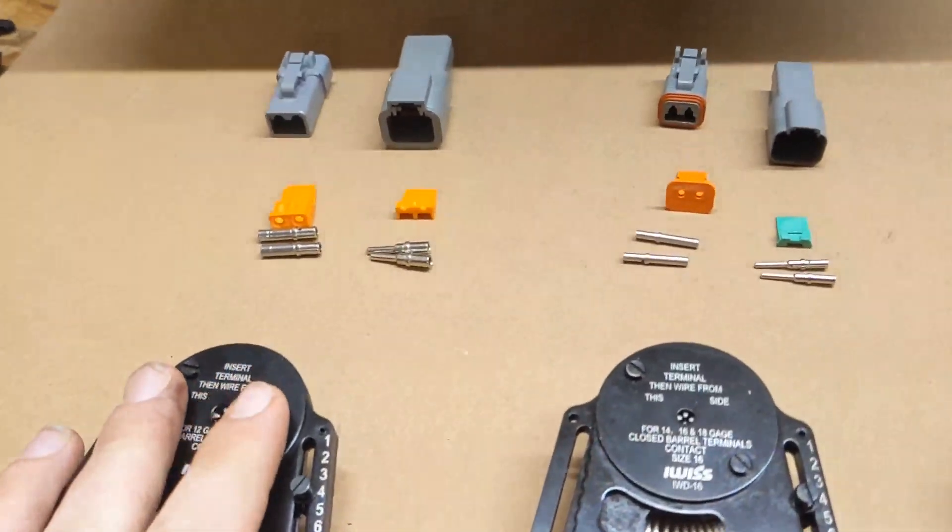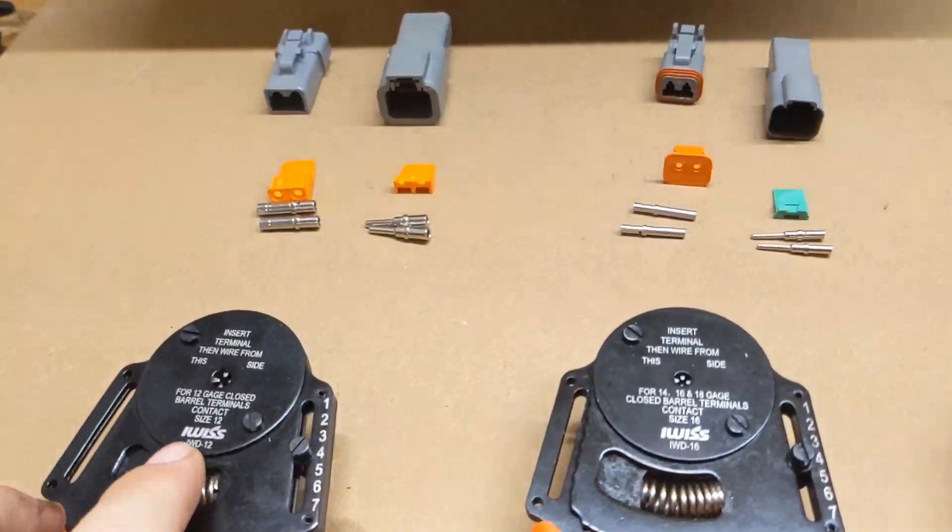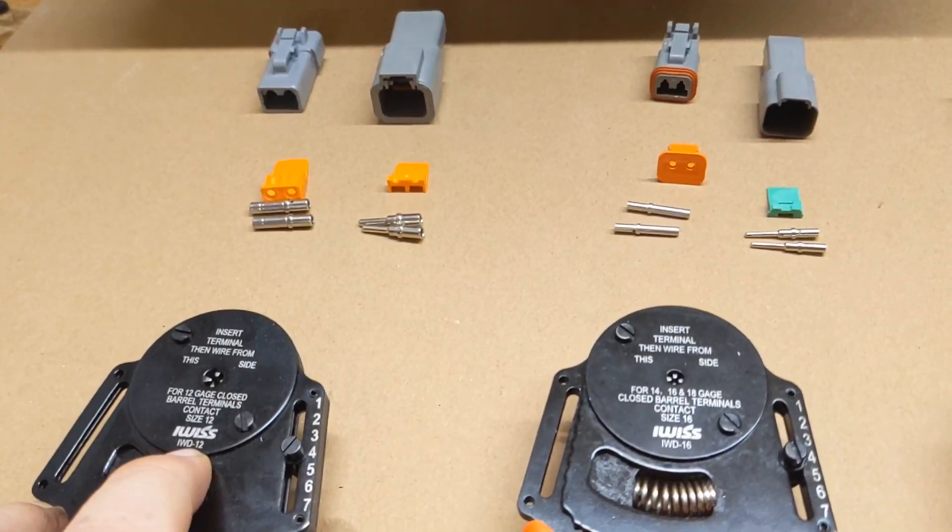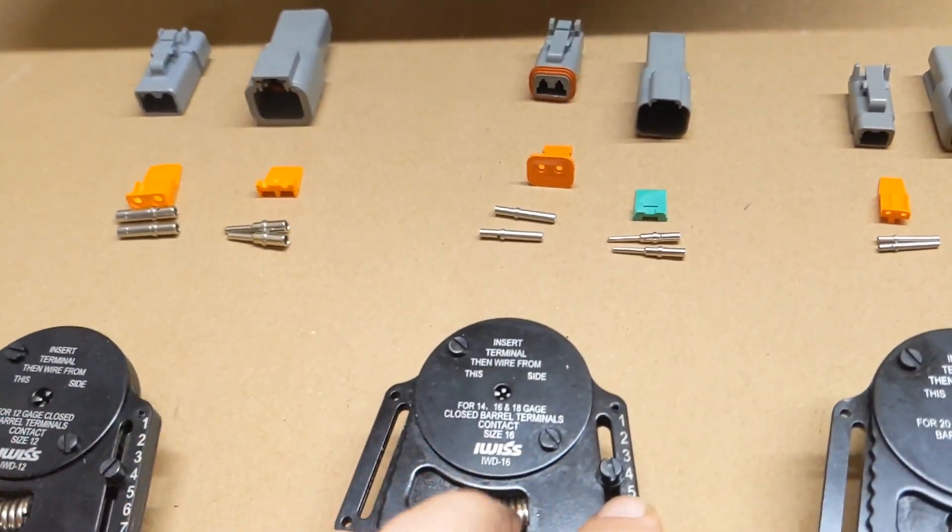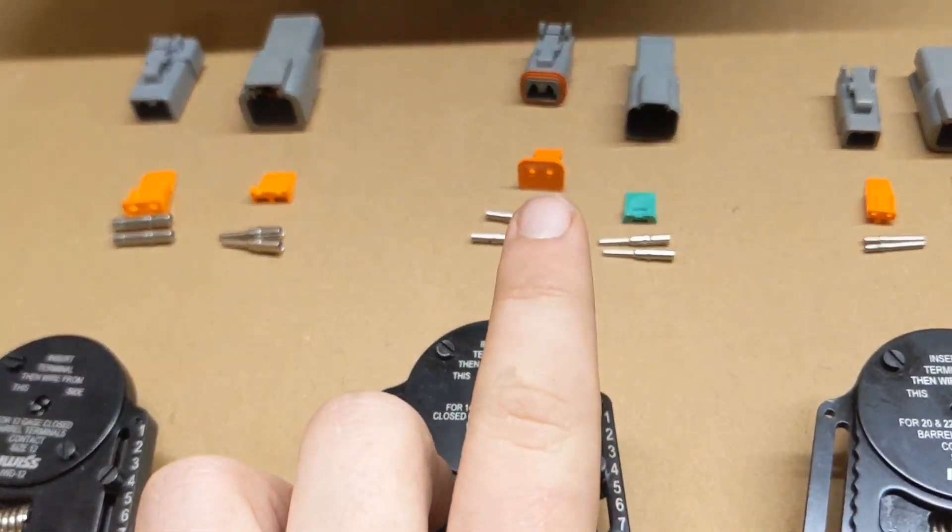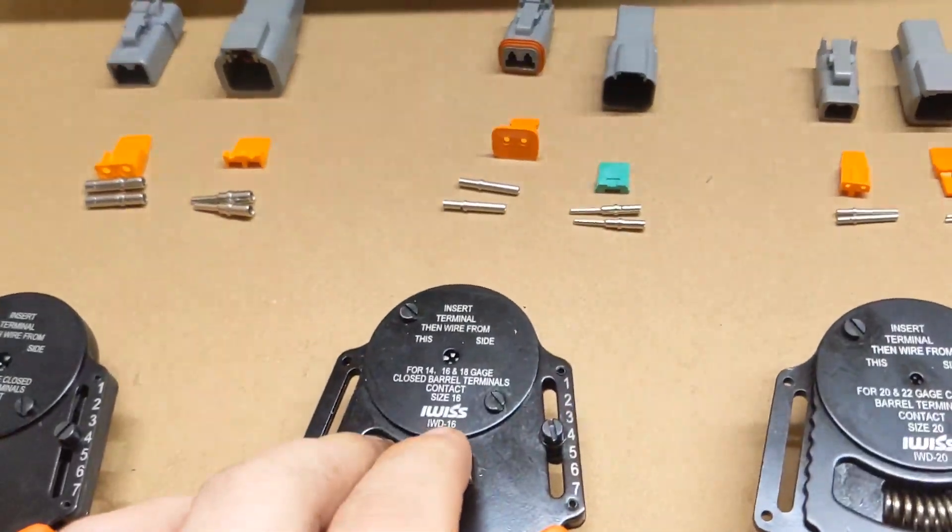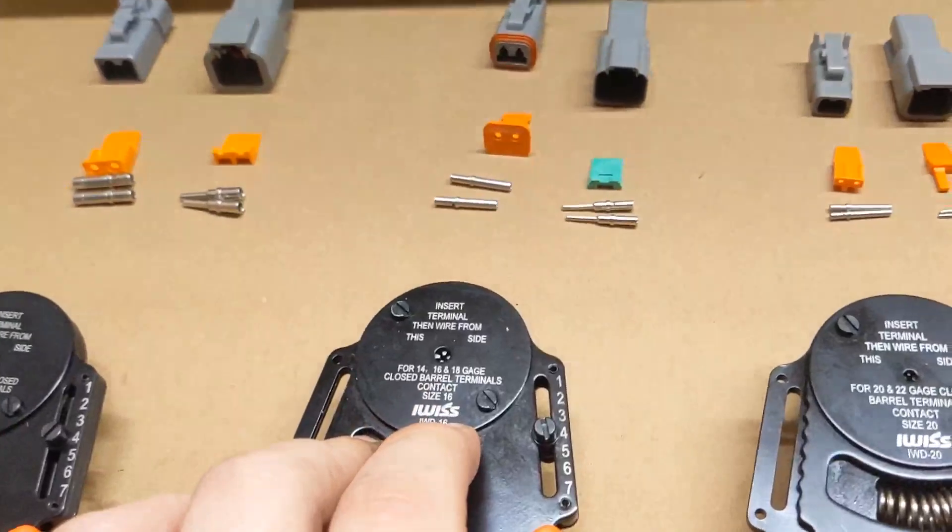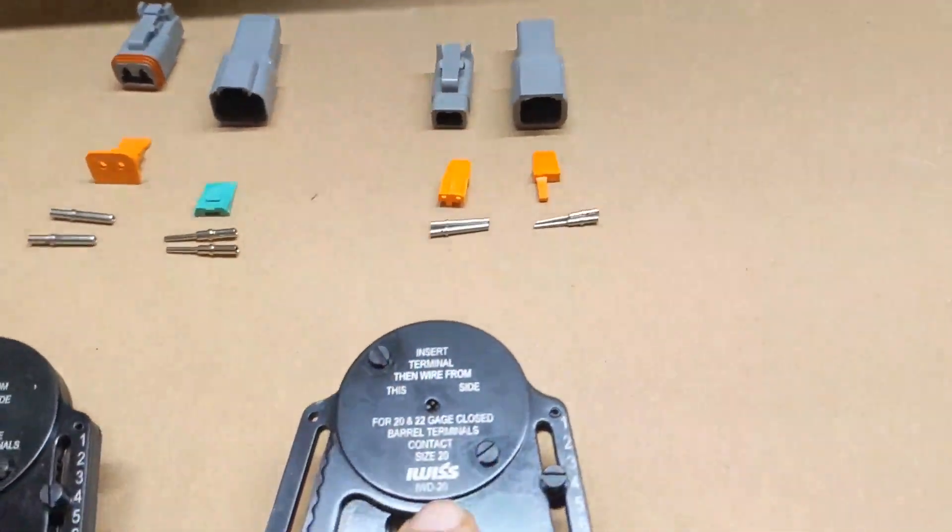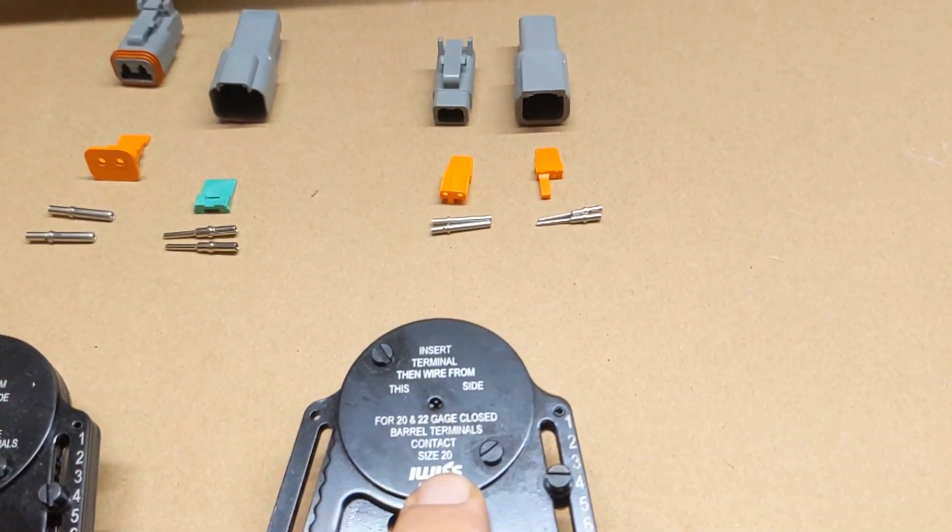On the big 25 amps, you use a 12 Krumpa. On the DT series, which is the 13 amp ones, you use a 16 Krumpa. And on the DTM, you use the 20 Krumpa.